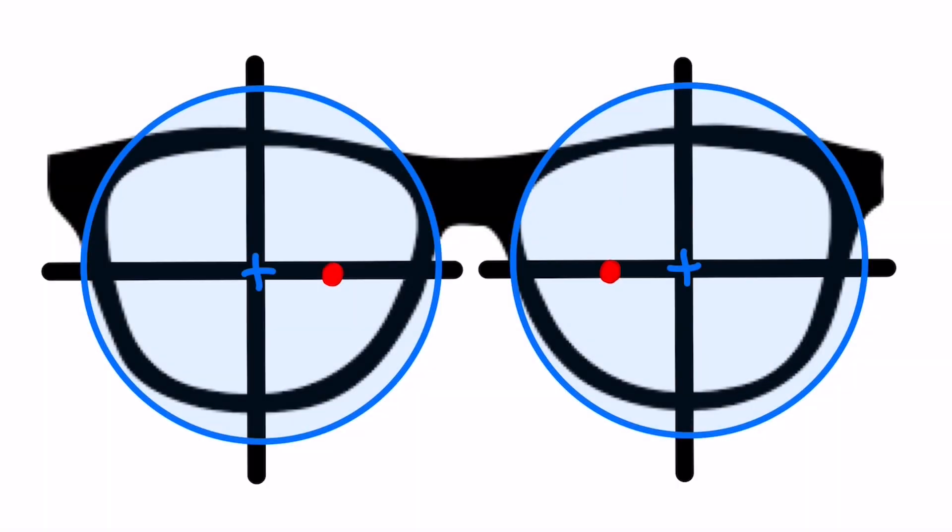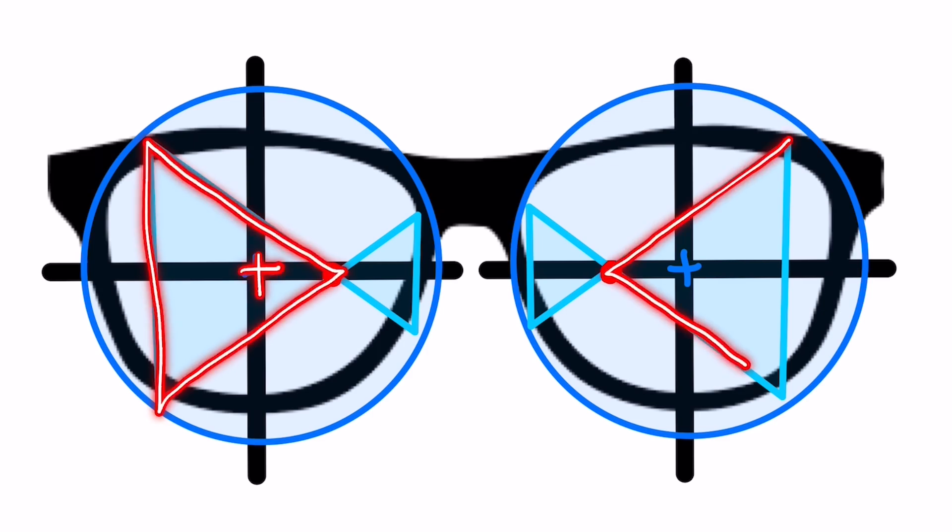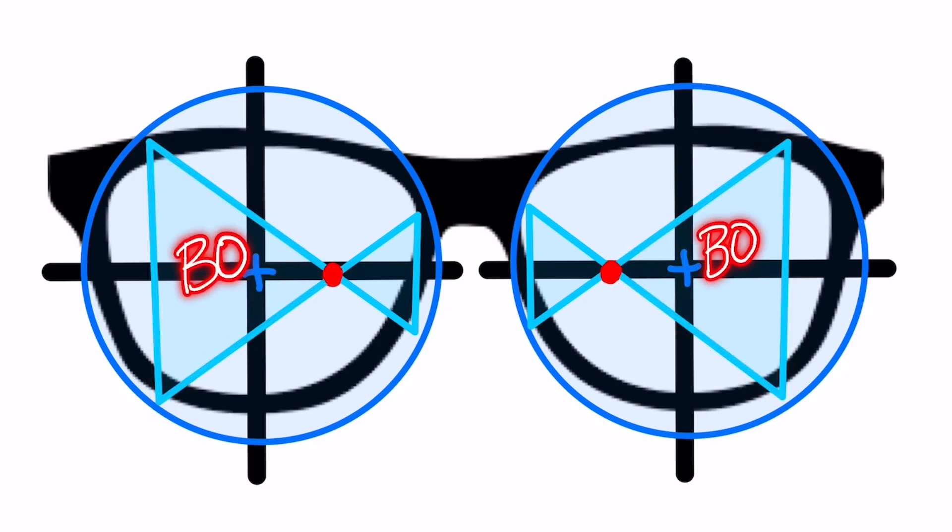Now that we know the amount of prism needed, we need to determine the base direction to make sure that the OC is decentered correctly on the blank. If this lens had been minus powered, let's say a minus 1, a decentered OC would create base out prism at the geometric center. The OCs were decentered in towards the nose, and the resulting prism at the geometric center caused by the minus lens shape would be base out.